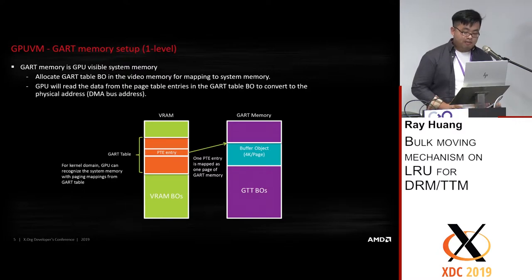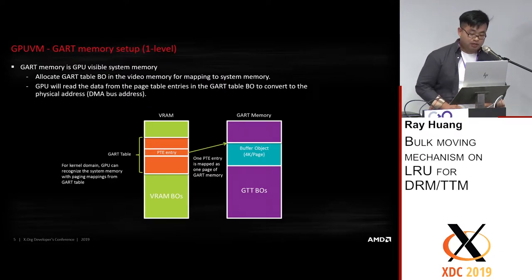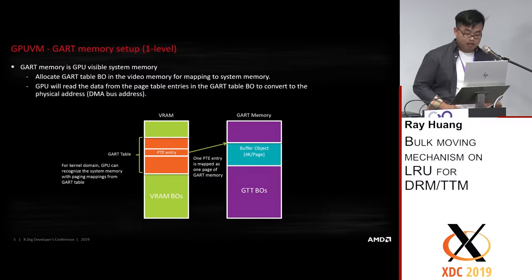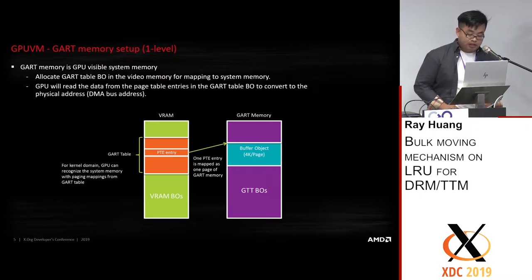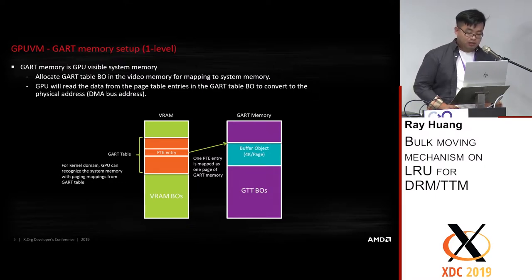The AMD GPU has an MMU unit for address translation from virtual address to physical address, and it uses page tables to map system memory to video memory with GPU VM. In the simplest case, we map GART memory with a GART table in VRAM. The GART table is a one-level page table with only PTEs as page table entries — no PDEs here. With the GART table set up, GART memory can be accessed by the GPU. The GART table must reside in video memory because the GPU can only access video memory directly.